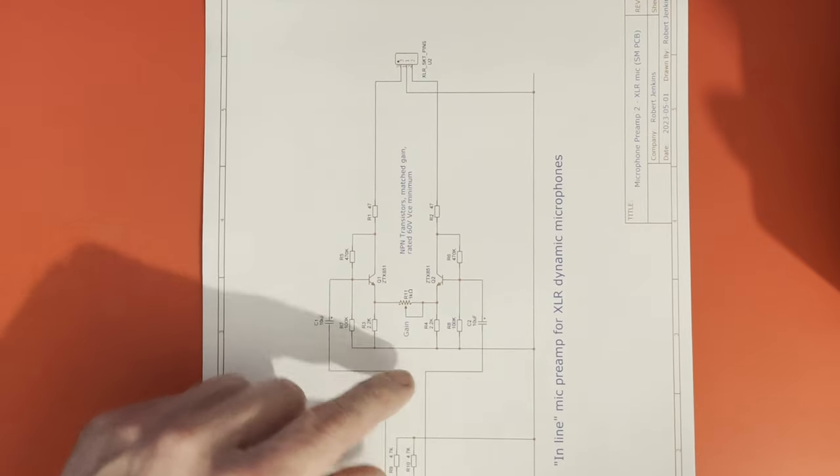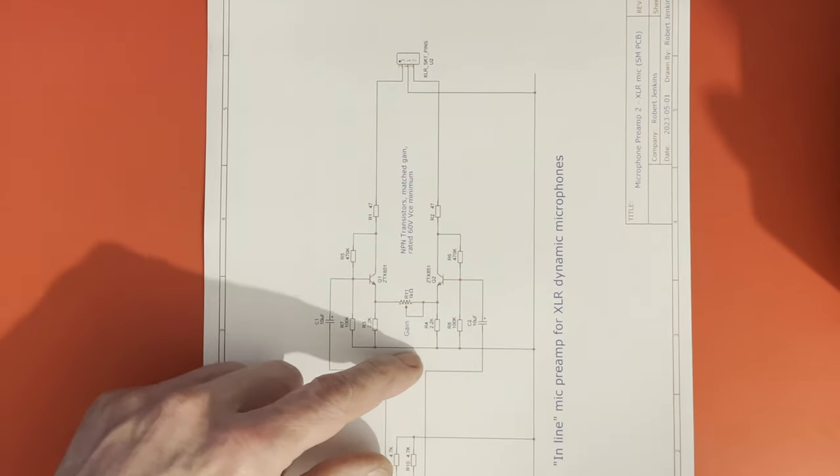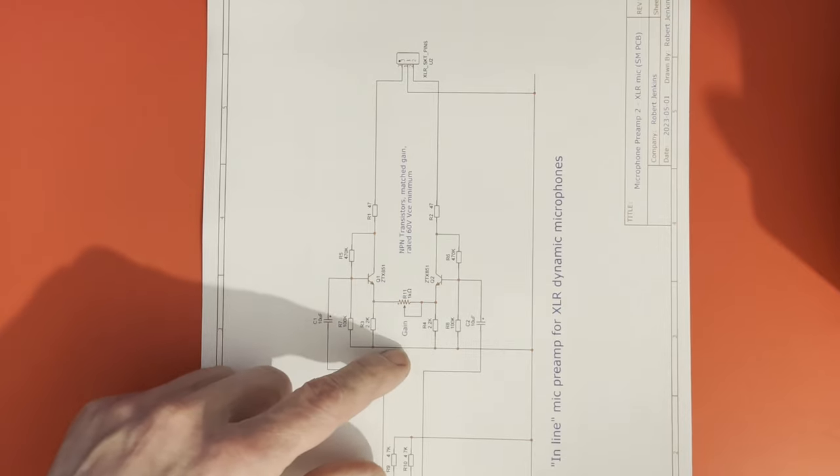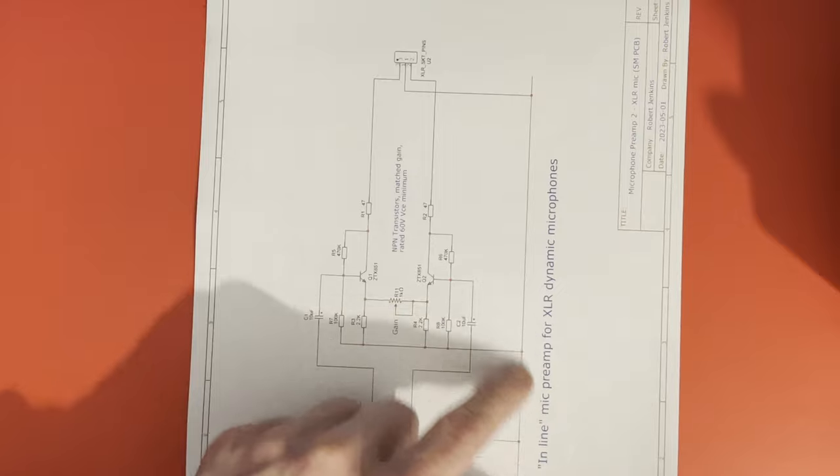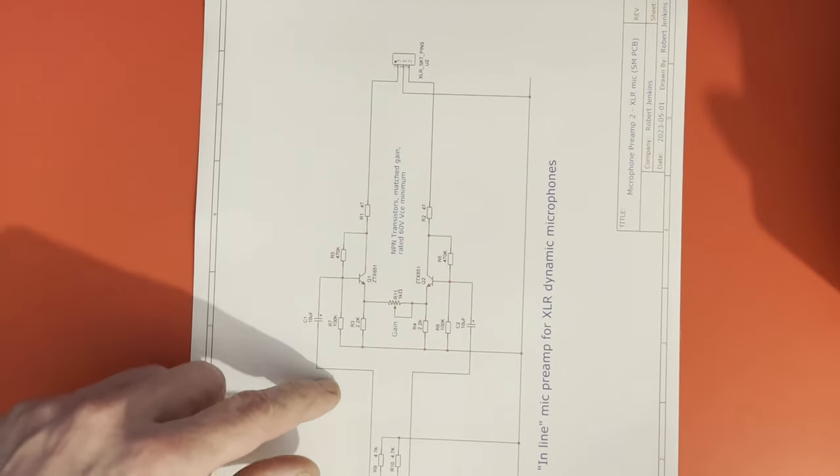The difference from that is this doesn't have the Zener between the output stage ground and the true ground. It's just all directly connected together and the bias is appropriately readjusted to allow for the different voltages.